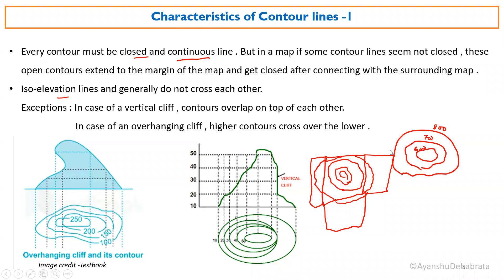Contours are iso-elevational lines and generally do not cross each other — each contour makes its own loop, 600, 700, 800. But there are two exceptions: in the case of a vertical cliff and in the case of an overhanging cliff.